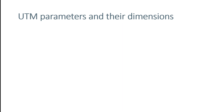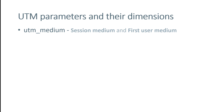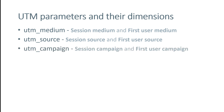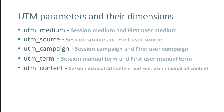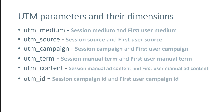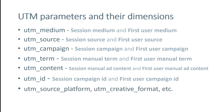Here's a quick cheat sheet of the exact dimension names for UTM parameters in Google Analytics 4. UTM medium maps to Session Medium or First User Medium. UTM source maps to Session Source or First User Source. UTM campaign maps to Session Campaign or First User Campaign. UTM term maps to Session Manual Term or First User Manual Term. UTM content maps to Session Manual Ad Content or First User Manual Ad Content. There's also UTM ID, which maps to Session Campaign ID or First User Campaign ID. Additional parameters like UTM source platform map to Session Source Platform or First User Source Platform.